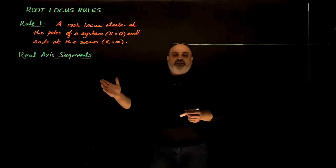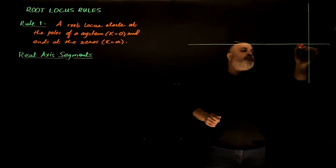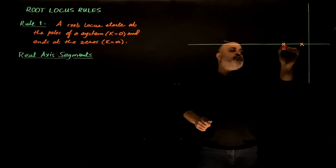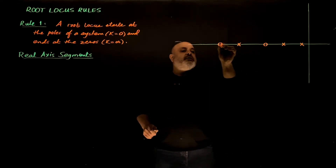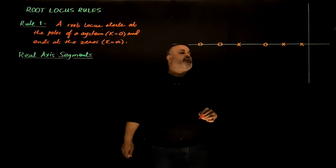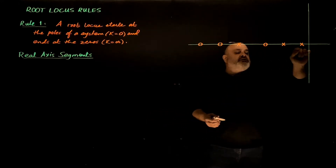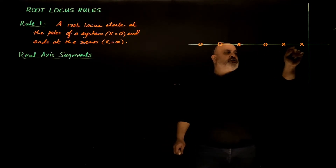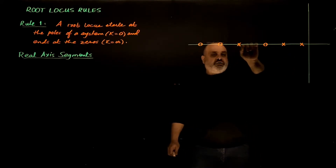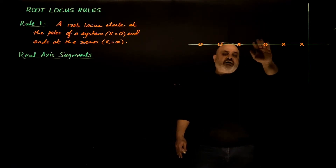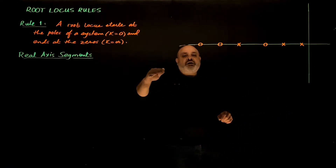Suppose we have a system with poles and zeros on the real axis. Let's place random poles and zeros: pole one, pole two, a zero, a pole, a zero, and another zero. Definitely there should be roots on the real axis because the root locus starts at the poles and zeros, so it will start on the real axis and then it might continue or depart from it.